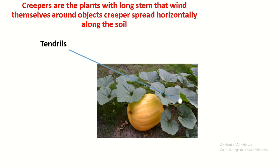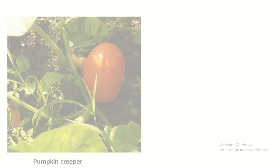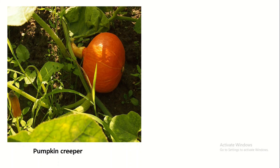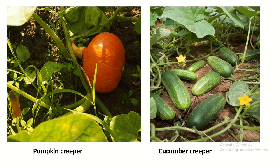They have tendrils, leaves, and fruits. For example, pumpkin creeper and cucumber creeper.